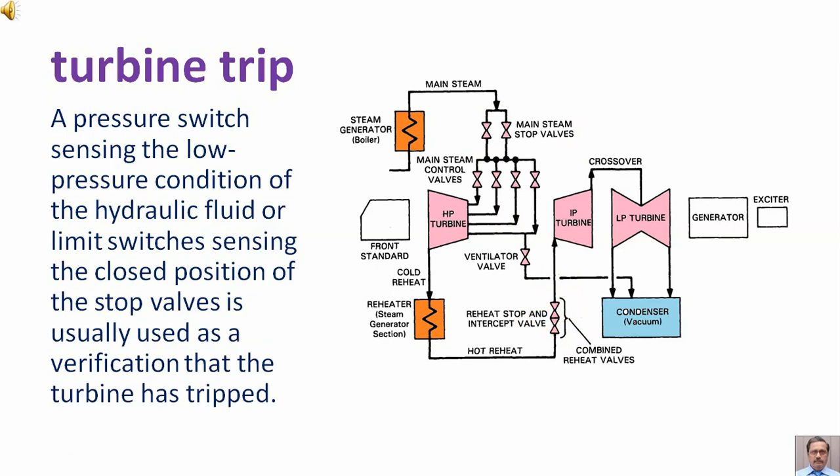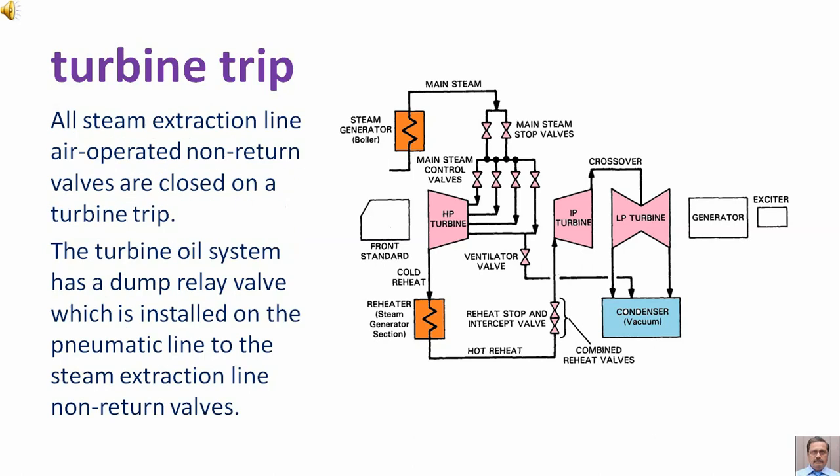A pressure switch sensing the low pressure condition of the hydraulic fluid, or limit switches sensing the closed position of the stop valves, is usually used as verification that the turbine has tripped. All steam extraction line air-operated non-return valves are closed on a turbine trip. The turbine oil system has a dump relay valve installed on the pneumatic line to the steam extraction line non-return valves.